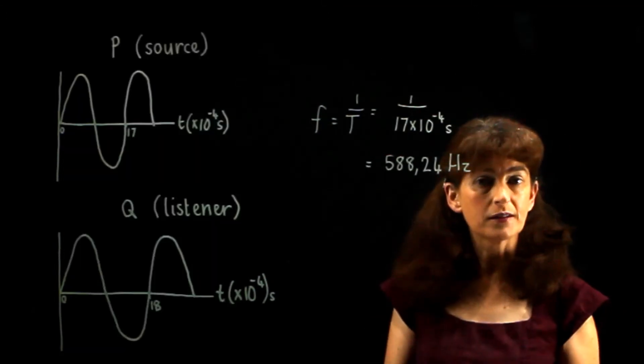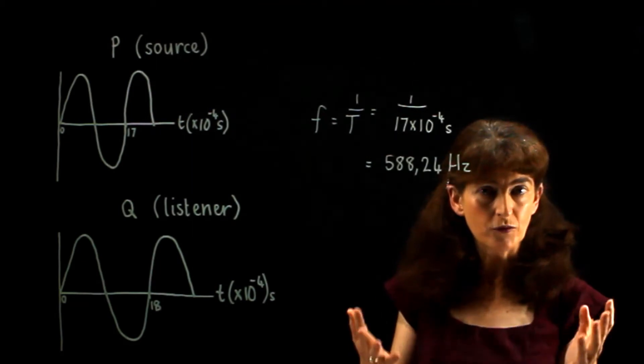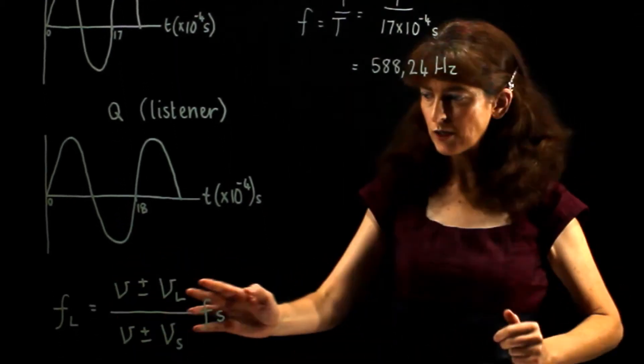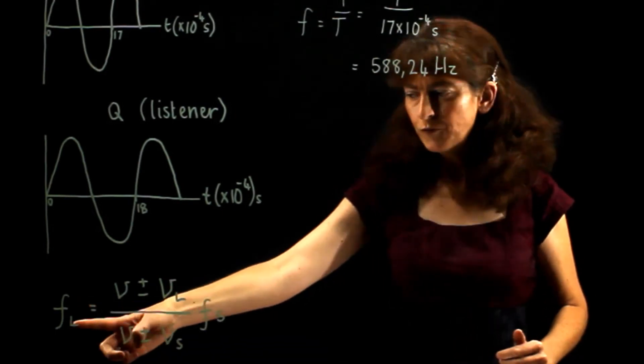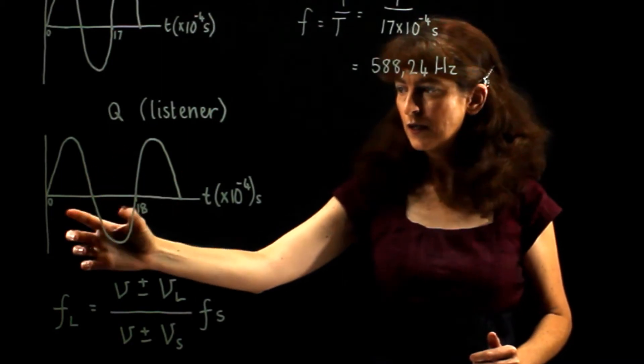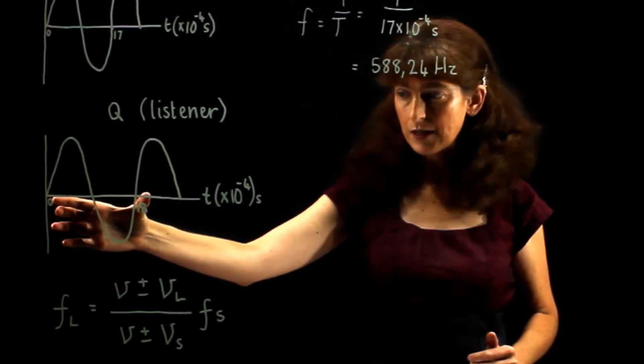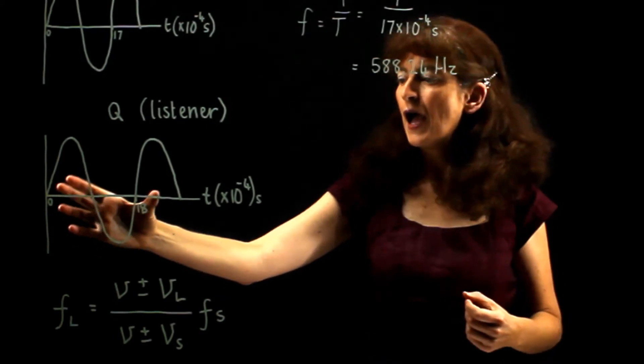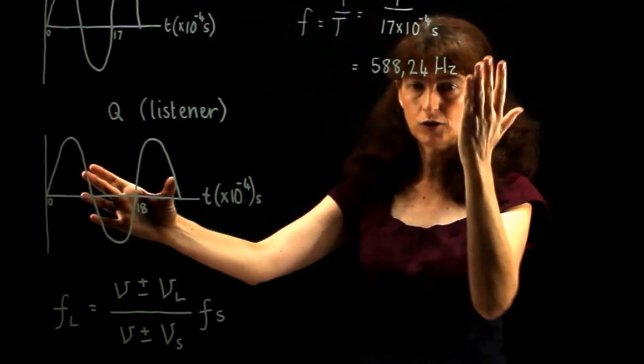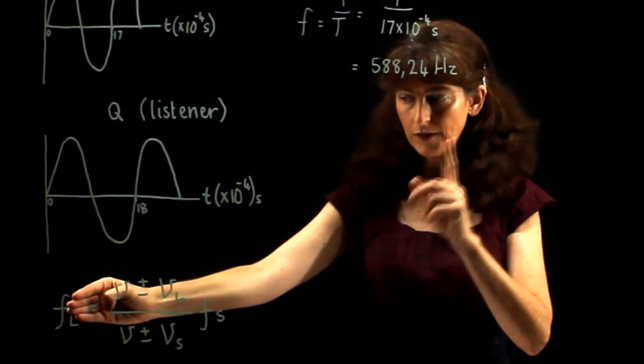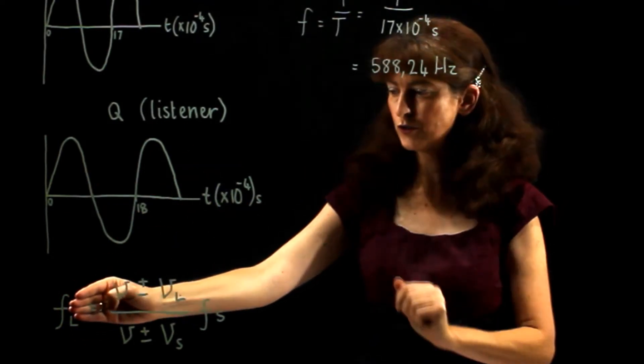The next question asks us to find out the speed of the moving police car. To do that, we need to understand this equation here. The frequency that the listener observes. Here we have the graph of the listener. There we have the period of the listener's wave that it hears. We could use a similar thing to find out the frequency of the listener. That must be the first step that we're going to do.